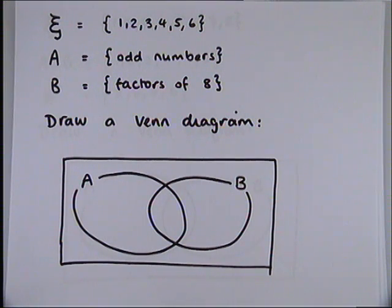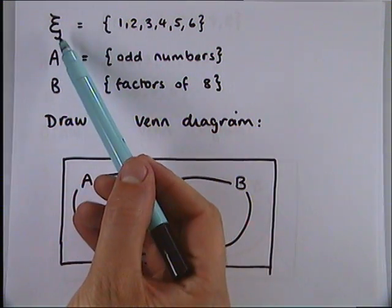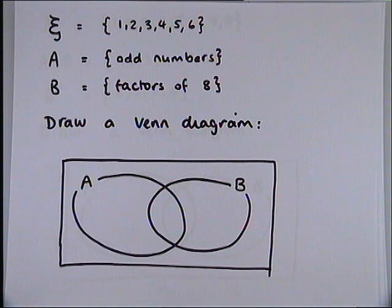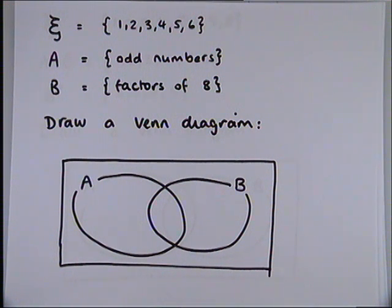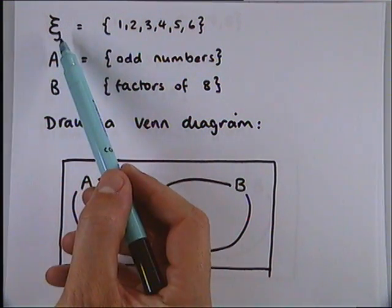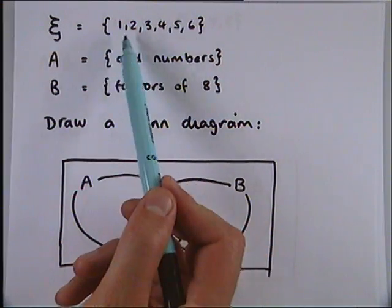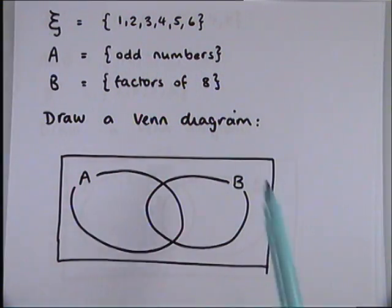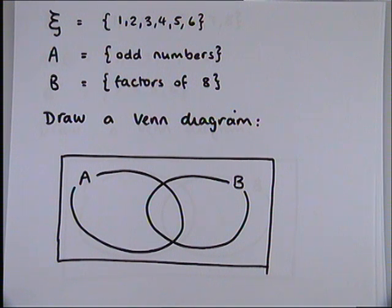The first bit of set notation we're going to look at is this strange symbol here. It's a Greek letter — I think it's Greek letter Xi, but I'm not sure how to pronounce it. I'm going to call it the sort of curly E thing. And the curly E thing tells you all the numbers that need to go in your Venn diagram. It's called the universal set — all of the numbers or elements you're going to be talking about in this diagram.